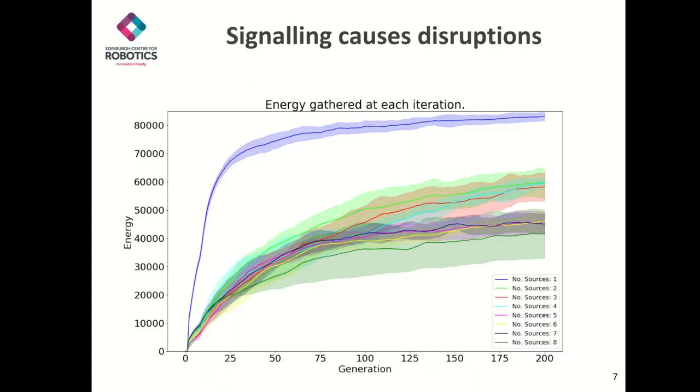We ran the same experiment, except the agents no longer had the ability to communicate amongst themselves. If we compare this to the previous set of simulations, the swarm's performance improves in all environments. This is an indication that perhaps the signaling is in fact acting as noise that the swarm is having difficulty overcoming.